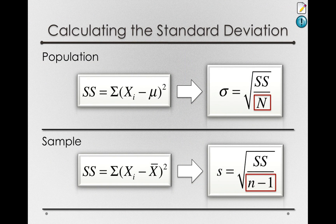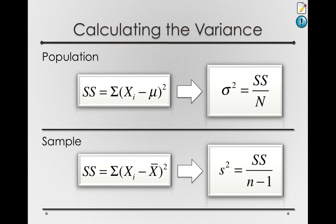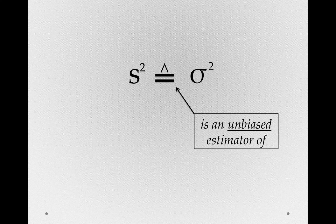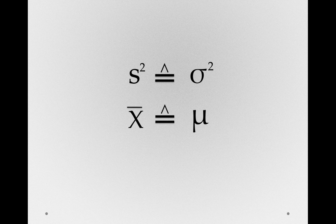Going back, the main insight from this section is that to estimate the population standard deviation or variance, we divide by n-1 in the denominator. The standard deviation in a sample is not an unbiased estimate of the population standard deviation — and that's okay. But when we talk about the variance, we can say that the sample variance is an unbiased estimate of the population variance. More formally, s-squared is an unbiased estimator of sigma-squared. We also saw that the sample mean is an unbiased estimator of the population mean.